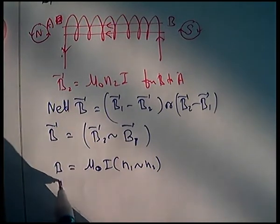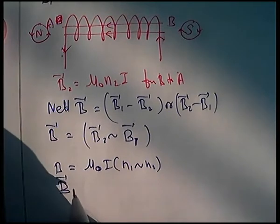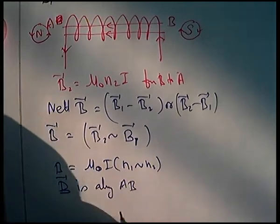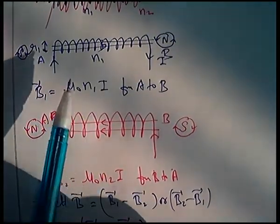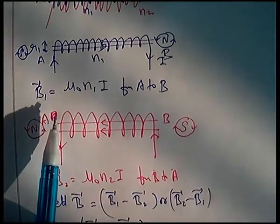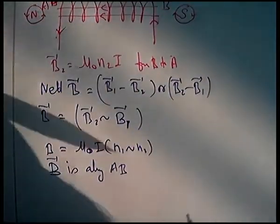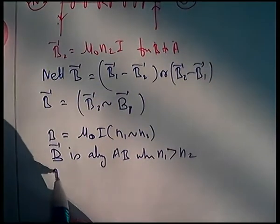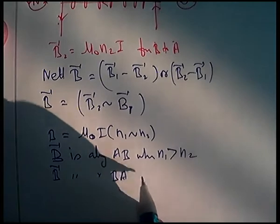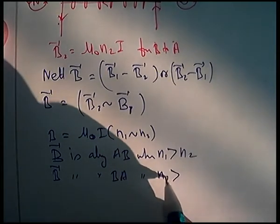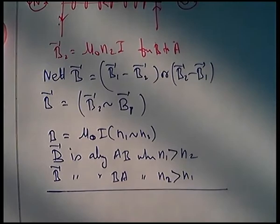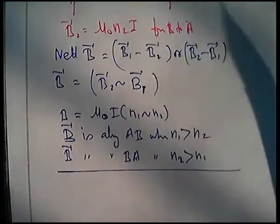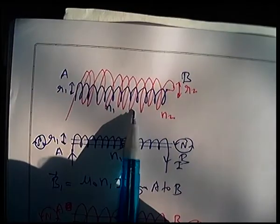Direction: B vector is along AB when N1 is greater than N2. B vector is along BA when N2 is greater than N1. This is your simple solution.